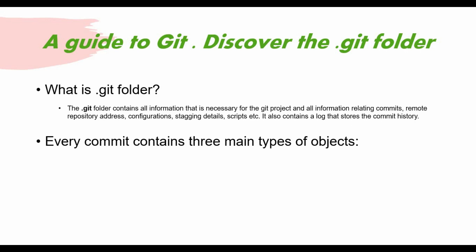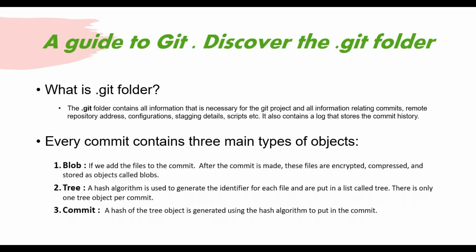Just before we start about the folder structure, I also want to let you know that there are different kinds of objects in Git. Whenever you make any commit, some objects get created: blob, tree, and commit. What is blob? For example, if you are trying to add some files and you commit those, whenever you make a commit, these files are encrypted and compressed and stored as an object called blob, which is stored under the .git folder.